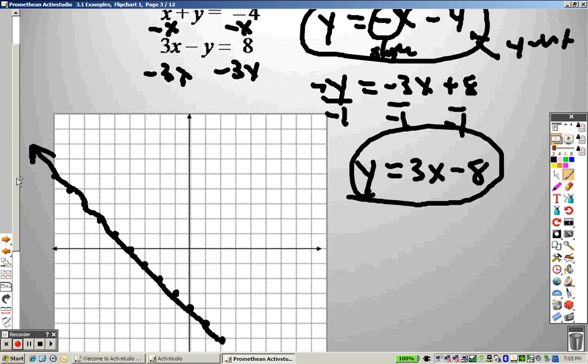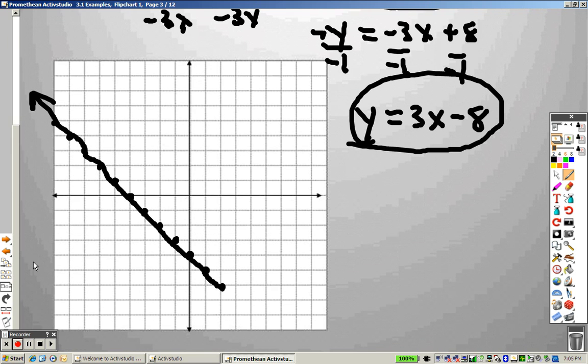Then the next one I'm supposed to graph here is y-intercept of negative 8. So that's 5, 6, 7, y-intercept of 8. Then up 3, right 1, up 3, right 1, up 3, right 1, and I draw a line.